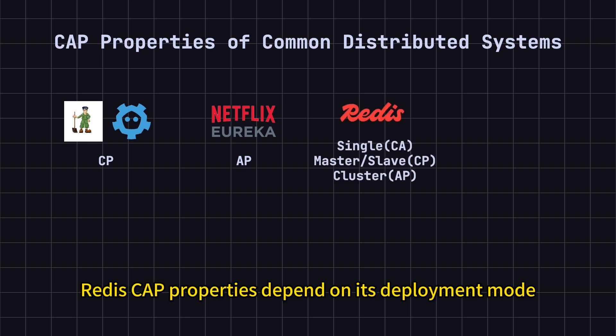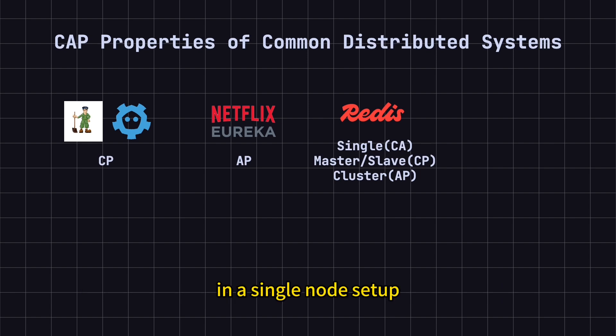Third, Redis. Redis's CAP properties depend on its deployment mode. In a single-node setup, Redis can be considered a CA system, as there's no partition tolerance issue. In master-slave mode, Redis is more of a CP system, prioritizing consistency during network partitions, potentially sacrificing availability. In cluster mode, Redis leans towards being an AP system, prioritizing availability during partitions, which might result in data inconsistencies.